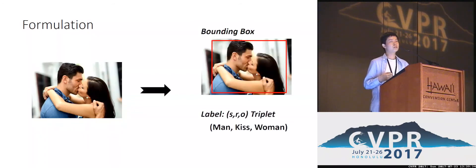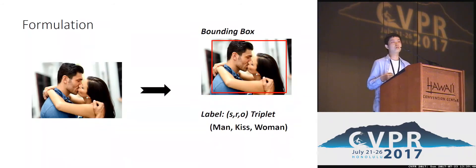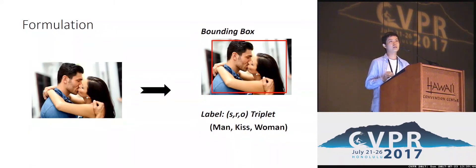We formulate this problem as follows. Each visual relationship will be represented using a triplet consisting of three components, namely the subject, the relation predicate, and the object. And besides recognizing the labels for the triplet, we have to also locate the triplet in the original image.